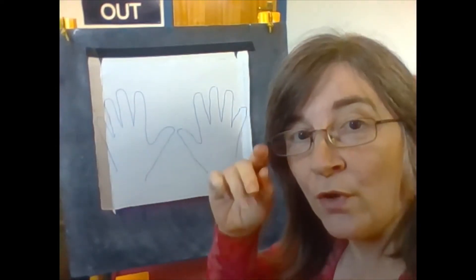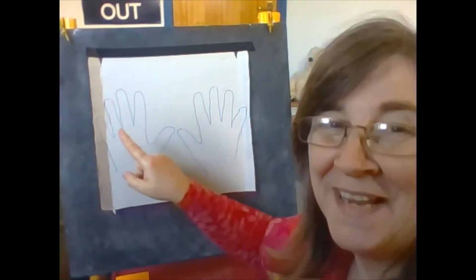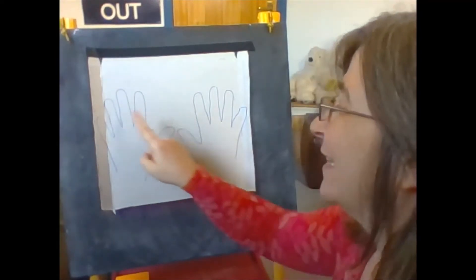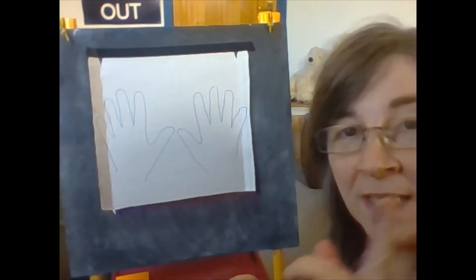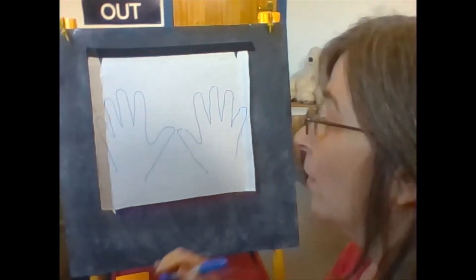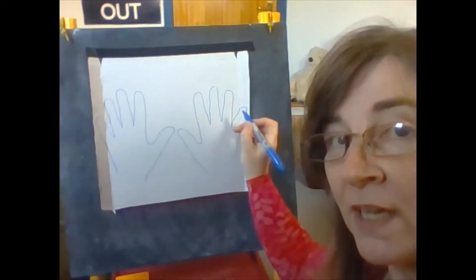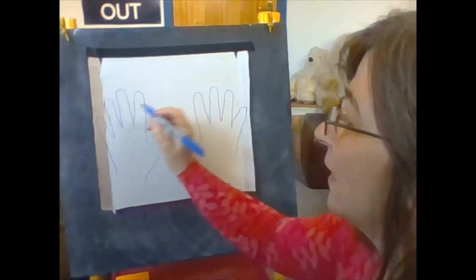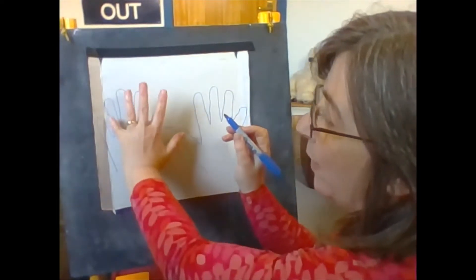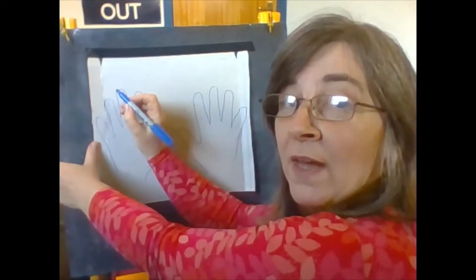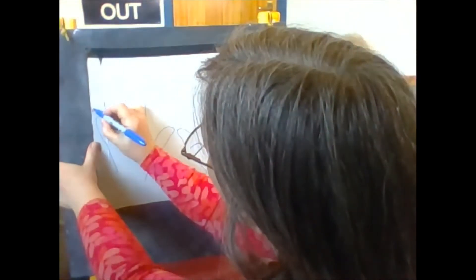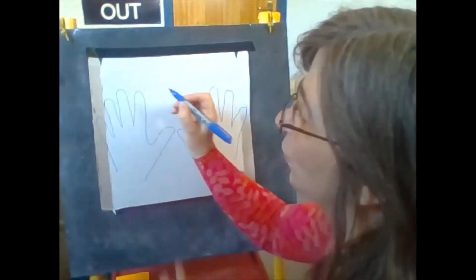But you can see now we've got the 10 different digits here and we're going to give these each a number. We're starting on the left hand side. We normally read from left to right so we're going to start off with the pinky of my left hand and we're going to number that number one.